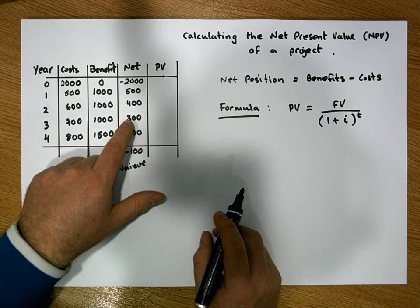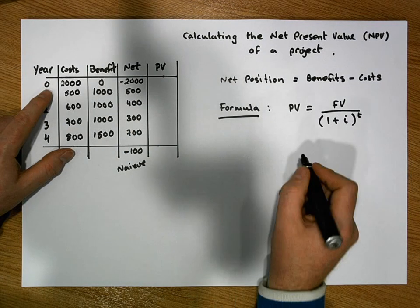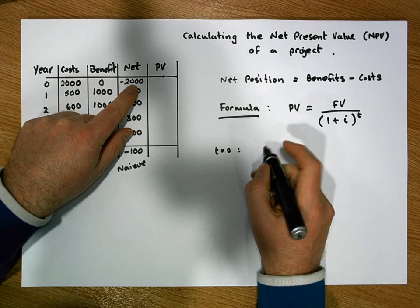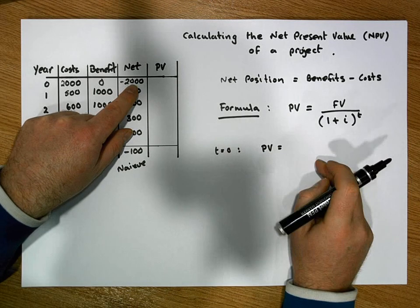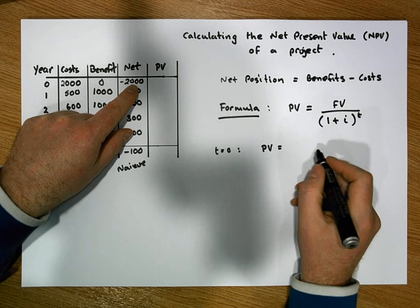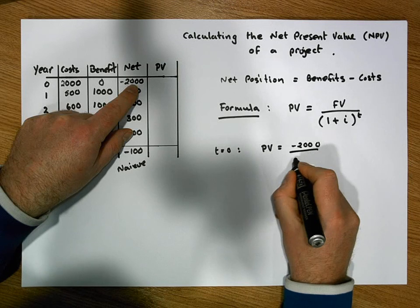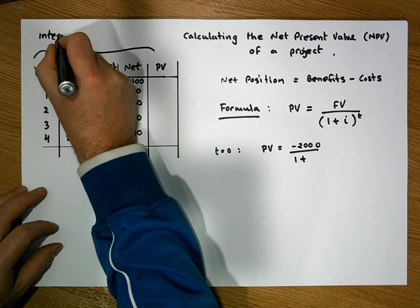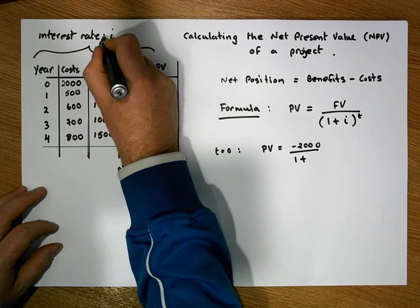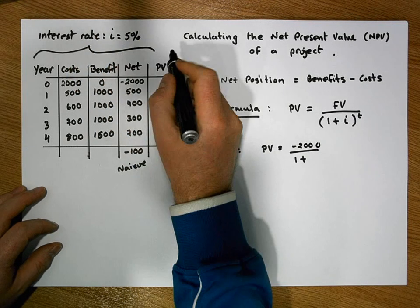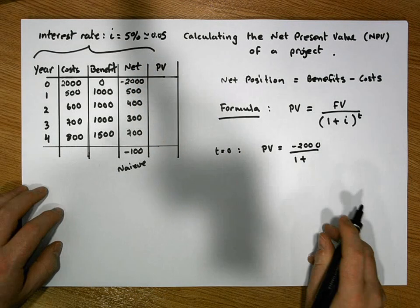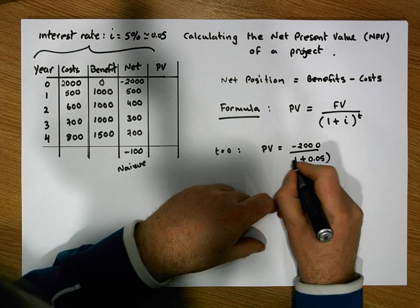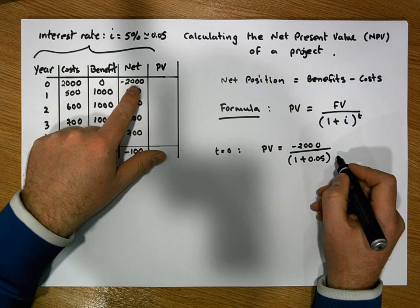For all these net positions, we need to calculate how much they're really worth in today's terms. When t = 0, the present value of −2,000 euros is: −2,000 divided by (1 + 0.05)^0, assuming an interest rate of 5% (or 0.05 as a decimal). Since we're discounting by zero years, t = 0.